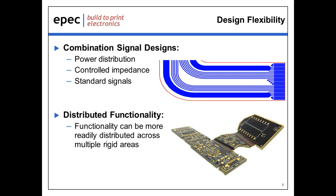Moving on to design flexibility: Flex and rigid flex technology allow for multiple signal types to be combined and carried through in the same flexible section in a given design. This creates opportunities for distributing functionality across multiple rigid areas to a higher degree, may allow for overall part dimensions to be reduced, added functionalities, and may facilitate circuit routing in higher density areas. It's very common to have designs with power distribution, high-speed controlled signal impedance, and standard signals combined into the very same flex interconnect.